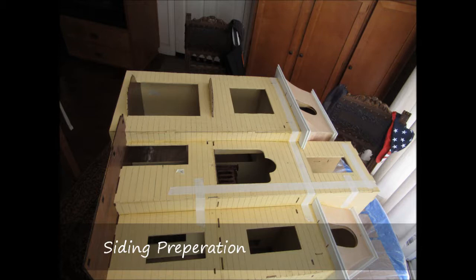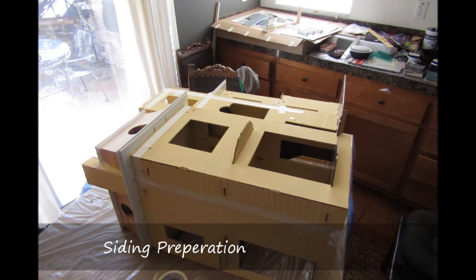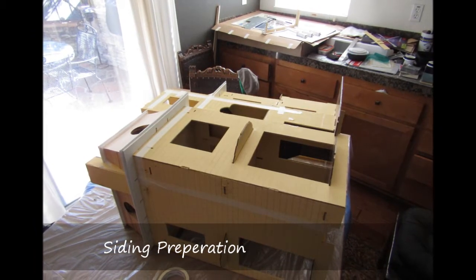If you prefer to have the first siding to have equal reveal, then either the bottom line will have to be slightly lower or the next line will have to be slightly higher.